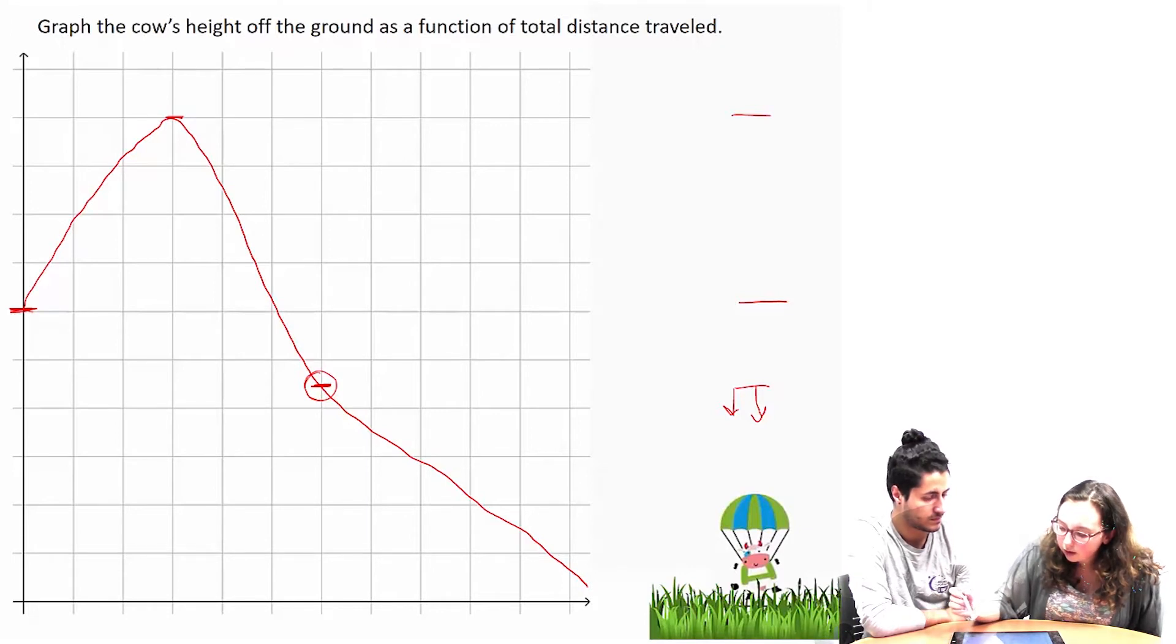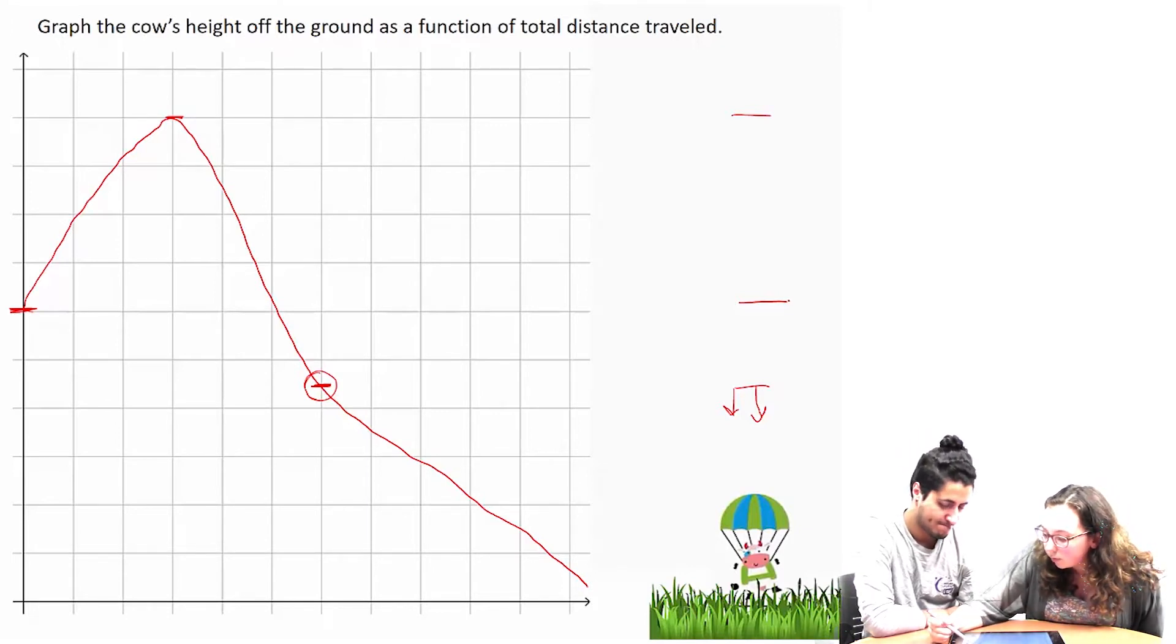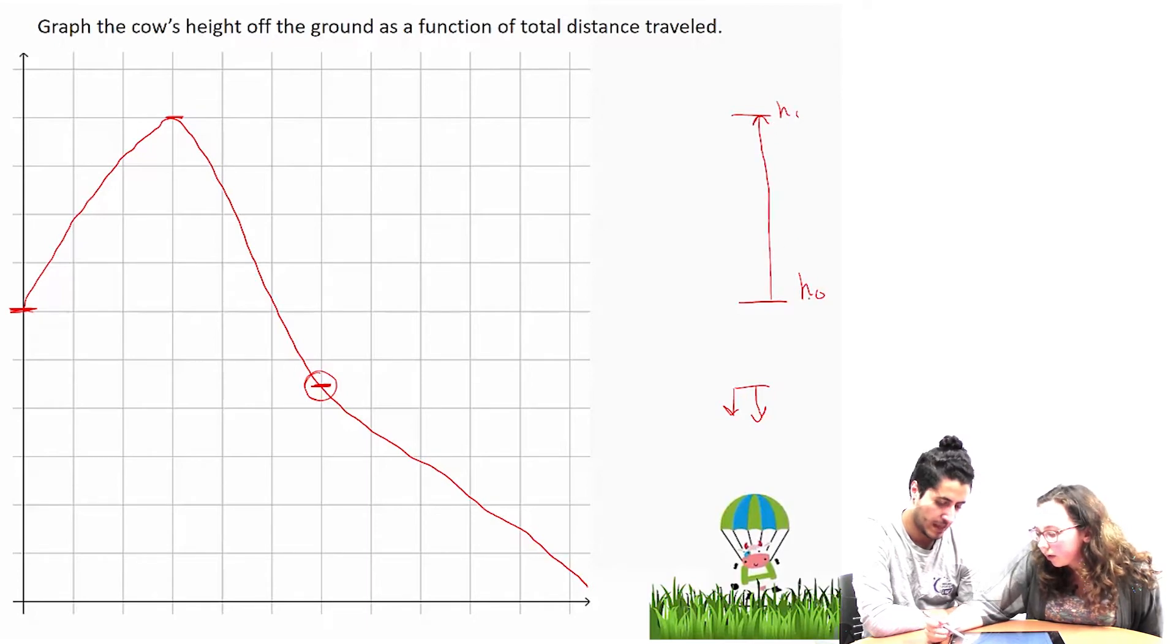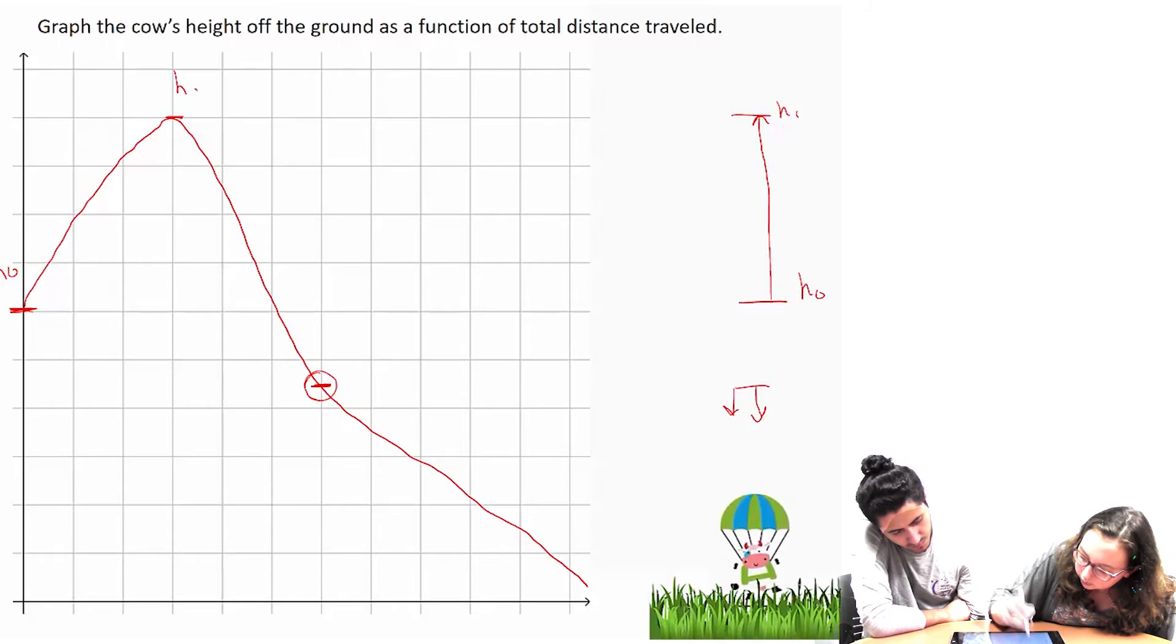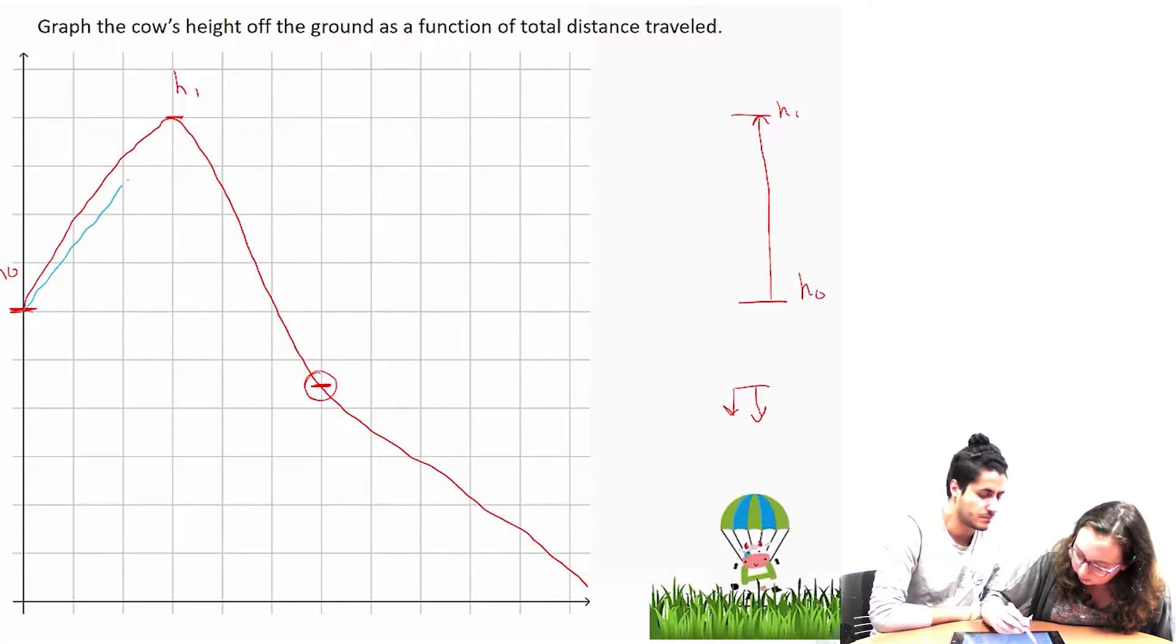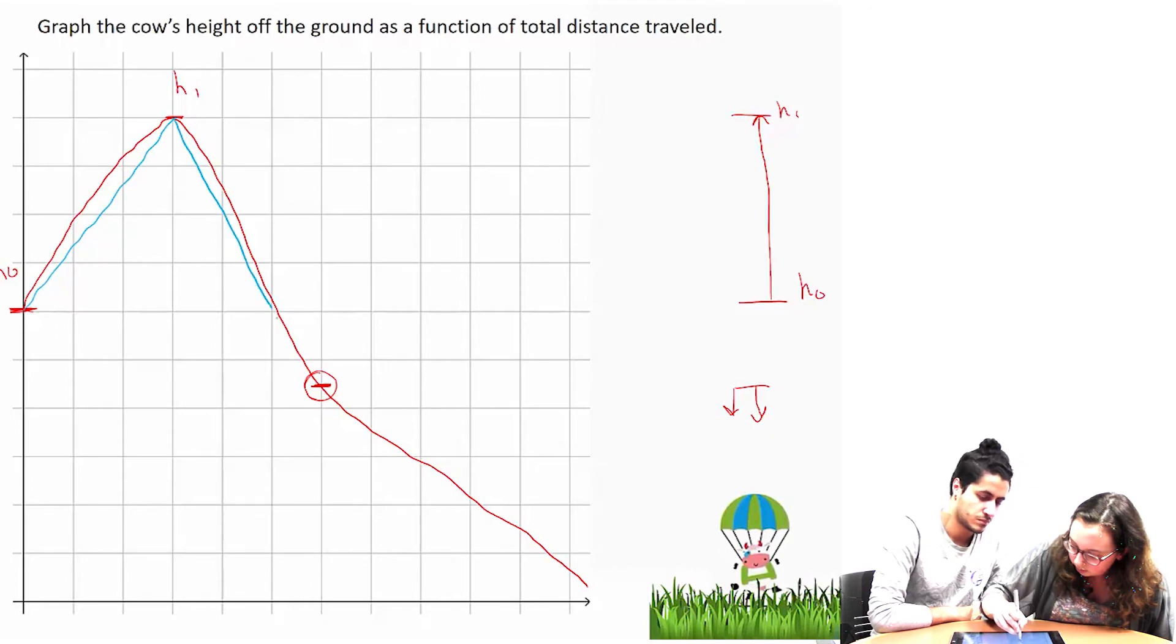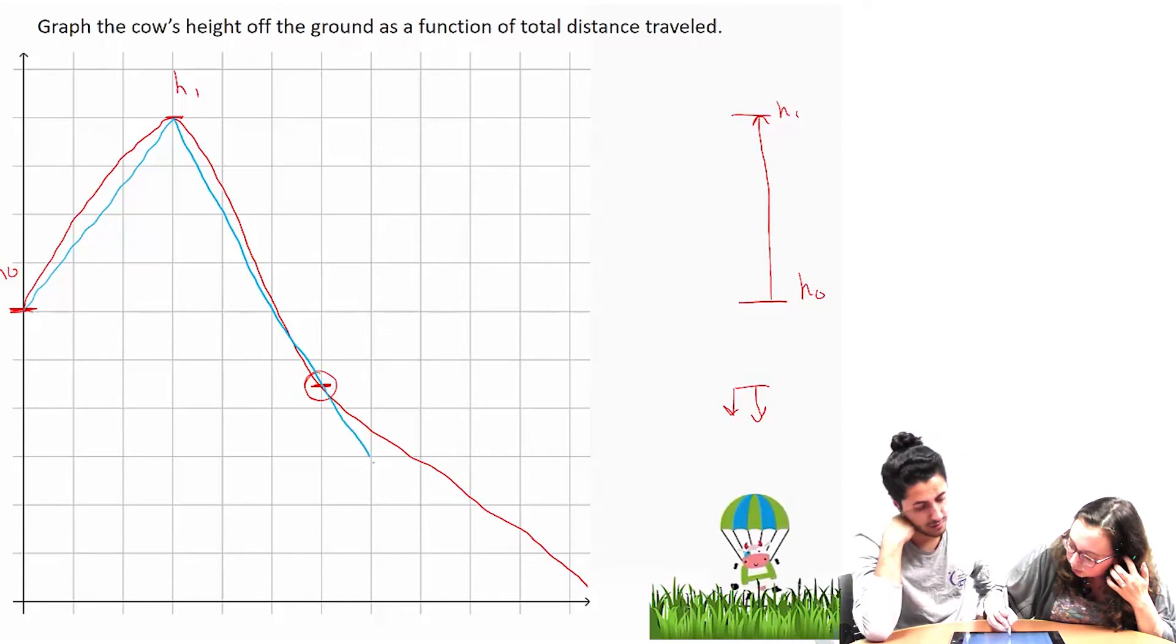So I think that, and the same with up here, say this is height zero, and this is height one, our total distance traveled is going to be equal to our height at height zero plus whatever we go up to. So if this is our height zero, this is our height one, I think because you kind of have a curve here, the graph should be more linear. And then, even after here, I think it should continue to follow the path.